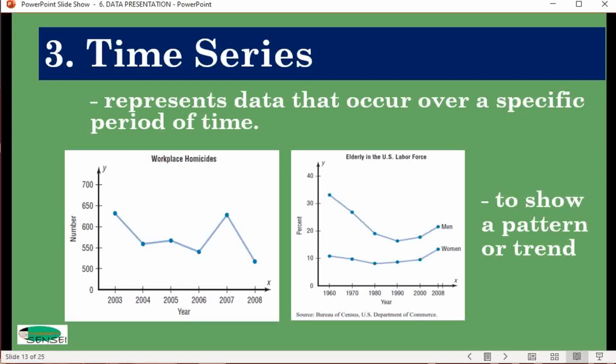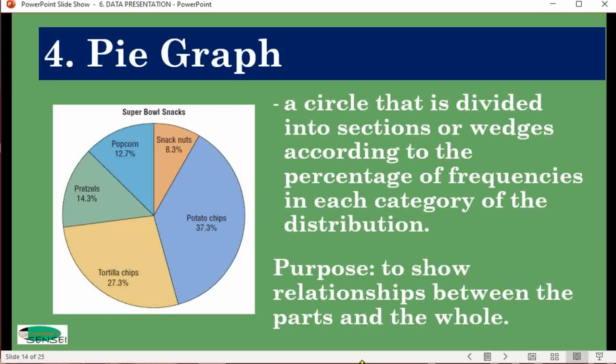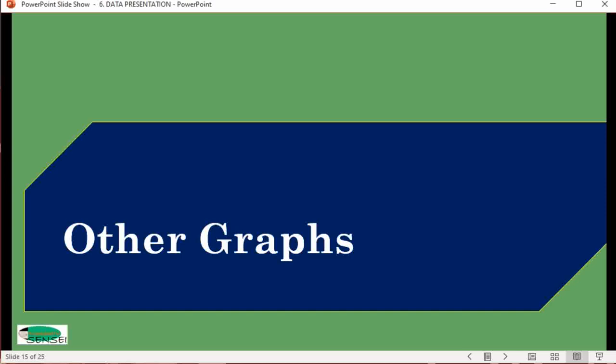Pie graph is a representation of datasets using a circle that represents 100 percent. The circle is divided into several parts indicating the number of each category. They are converted into percentage distribution. Its purpose is to show relationship between the parts and the whole.